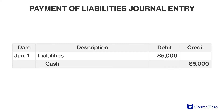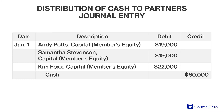The third entry involves the payment of outstanding liabilities. The final journal entry involves the closing of each partner's capital account in exchange for full payment of the remaining assets. The remaining cash — sixty thousand dollars — is paid out and each capital account is closed with a debit entry.